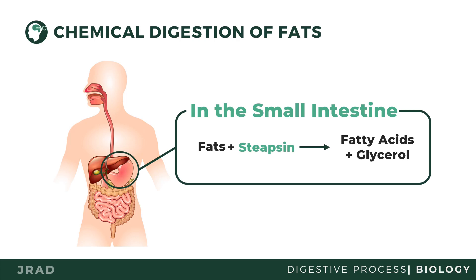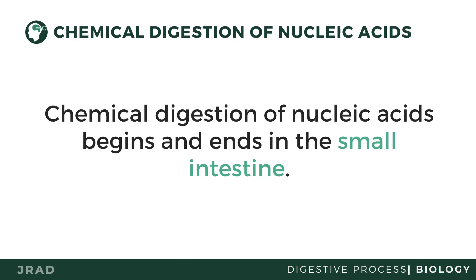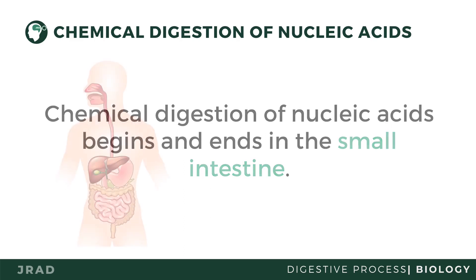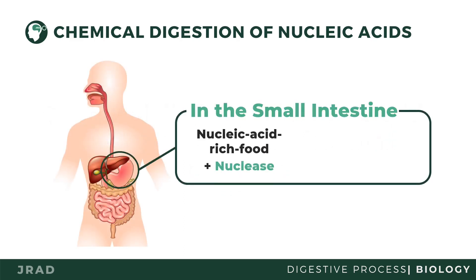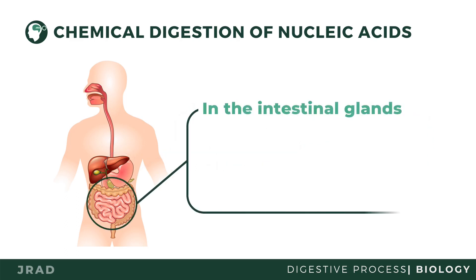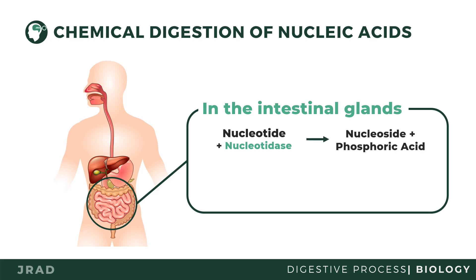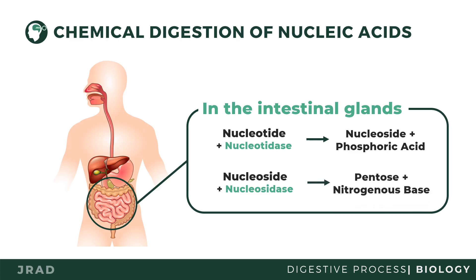Just like fats, chemical digestion of foods that are rich in nucleic acid mostly happens in the small intestine. The enzyme nuclease in the pancreatic juice acts on nucleic acid-rich foods and changes them into nucleotides. Nucleotidase will then change the nucleotides into nucleosides and phosphoric acid. Another enzyme called nucleosidase will further break down nucleosides into pentose and nitrogenous bases like purines and pyrimidines.